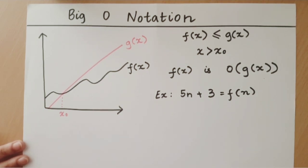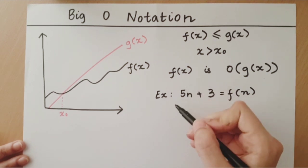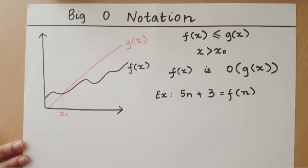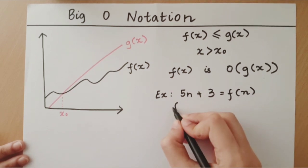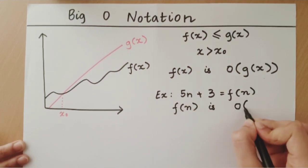Also in big O notation we need not worry about the constants because we are only worried about the growth. So, we say that f of n is order of n.